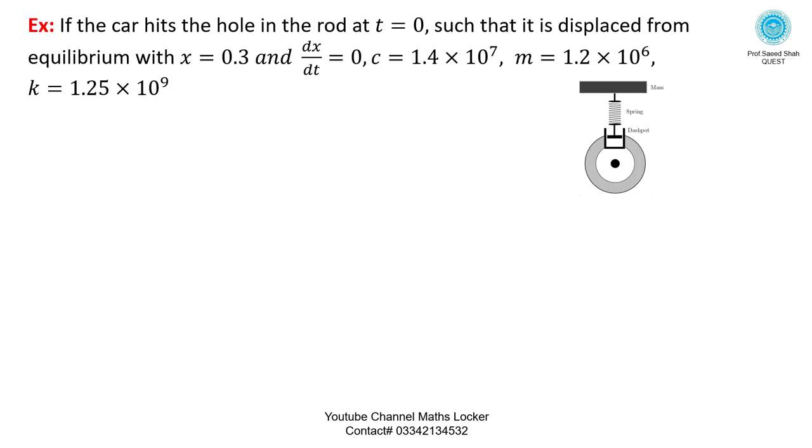Problem: If the car hits the hole in the road at t equals zero, such that it is displaced from equilibrium with x equals 0.3 and dx/dt equals zero, C equals 1.4 times 10⁷, mass m equals 1.2 times 10⁶, and K equals 1.25 times 10⁹.